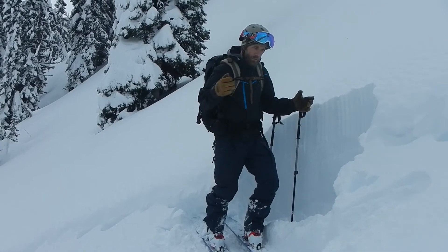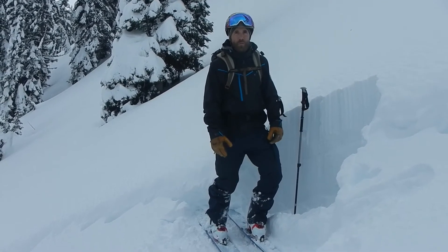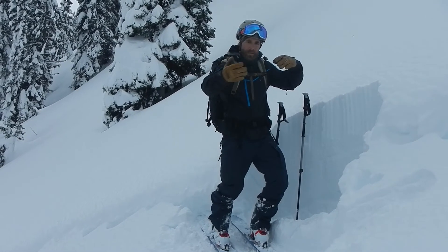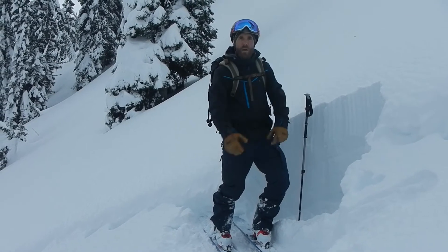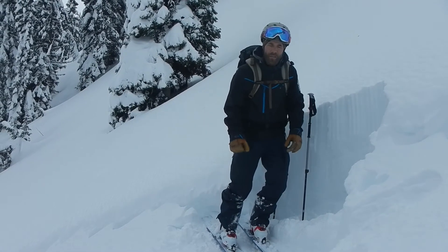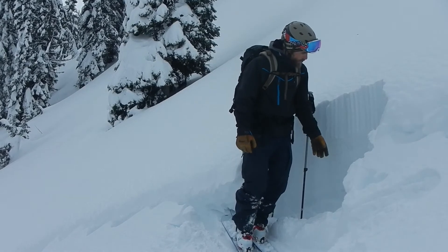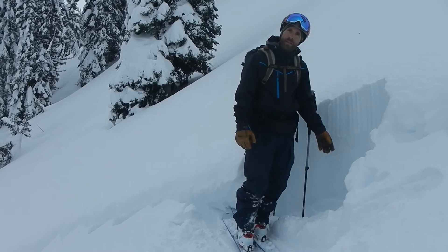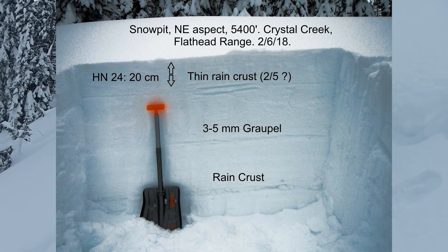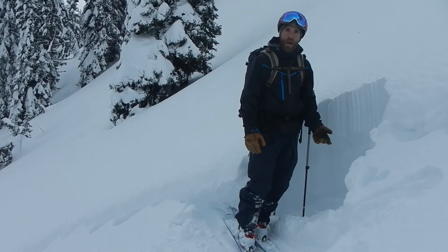When we're in amongst these complicated storm systems of warm Pacific air coming over the west interacting with a cold front over the divide, it's really important to evaluate what elevation these rain crusts are forming as well as where they're going away.